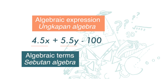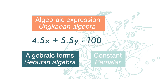And this 100 is called a constant term. Constant means not changing — regardless of your sales of nasi lemak and mee rebus, the rental remains unchanged at 100 ringgit.